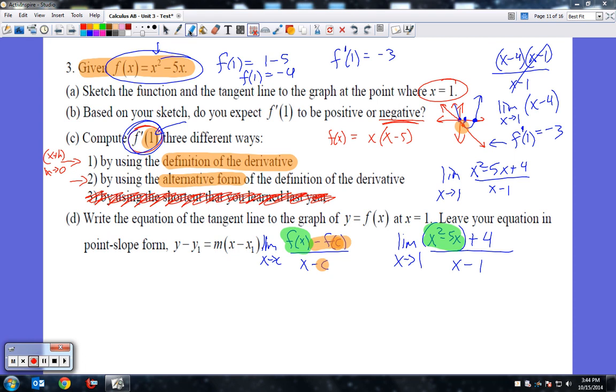Again, a reminder, the alternative form does not give us that equation of f'(x). It just gives us the f' evaluated at this specific one and only input, which in this case is one. Again, we still get the value of negative three that we got for the definition of the derivative. So I've sketched the function, the tangent line at one. I showed that I expected it to be negative. It in fact was true as far as being negative three. We did the definition of the derivative and the alternative form.